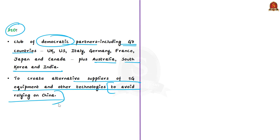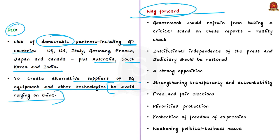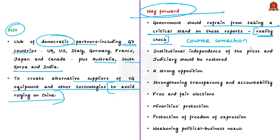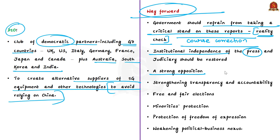The author discusses what can be done to preserve India's image as a true democracy. First, the government should refrain from taking a critical stand on these reports, as they give a reality check and room for necessary course correction. Second, institutional independence for the press and judiciary should be restored and maintained. In recent years, there has been curtailment of rights of the free press in reporting various incidents. Third, there should be a strong opposition at the national level to encourage criticism of the government, as a critical opposition can check the power of rulers. Strengthening transparency and accountability mechanisms will also help India do better in future years.